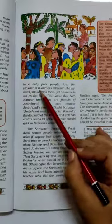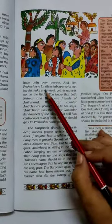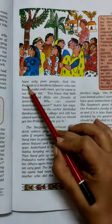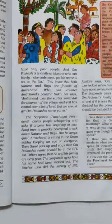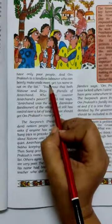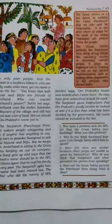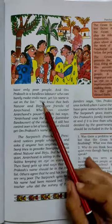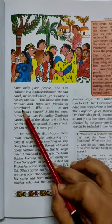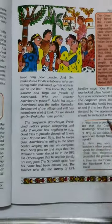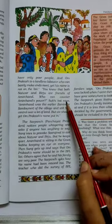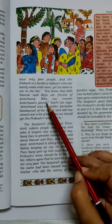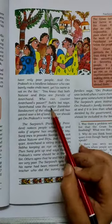Om Prakash एक landless laborer है जो मुश्किल से ends meet कर पाता है — मतलब उसके पास कोई ज़मीन नहीं है, वो मज़दूरी का काम करता है, बहुत मुश्किल से उसका गुज़ारा होता है — yet his name is not on the list, और तब भी उसका नाम इस list में नहीं है। सुखी बाई कहती है कि तुम्हें पता है ना, Natwar और Birju जो हैं वो Amir Chand के दोस्त हैं, और Amir Chand की power से कौन लड़ सकता है?